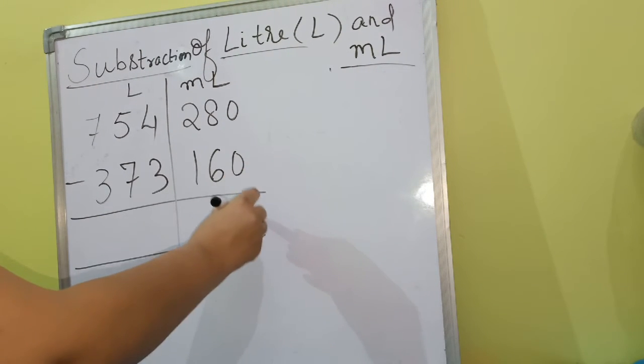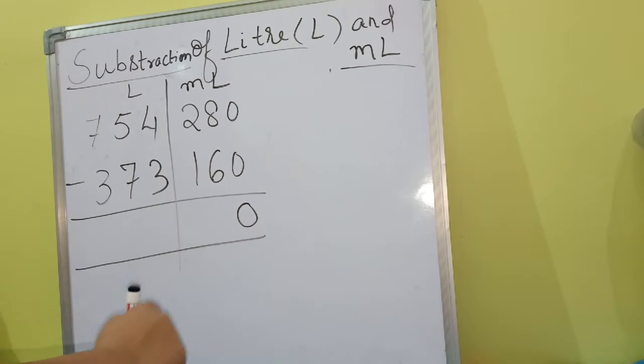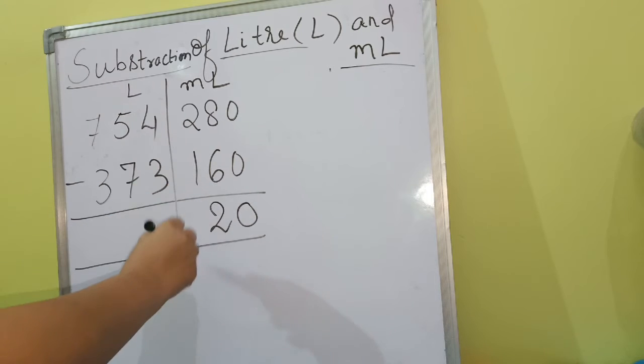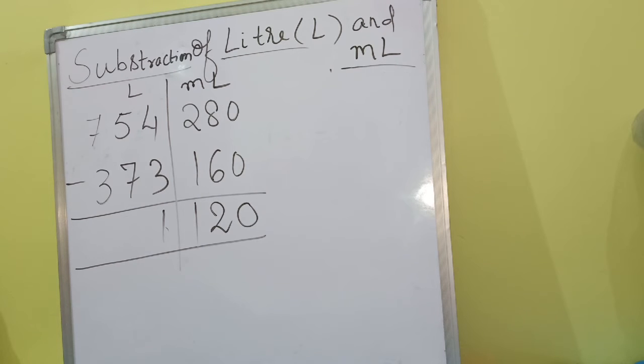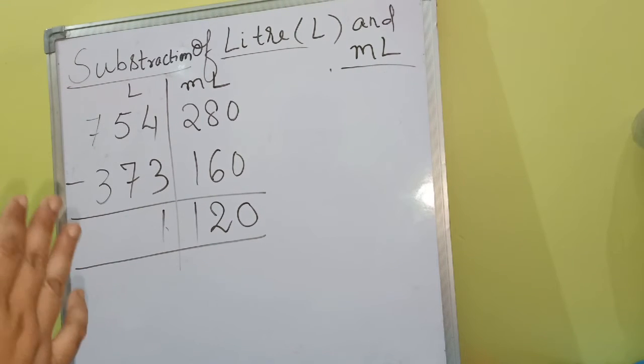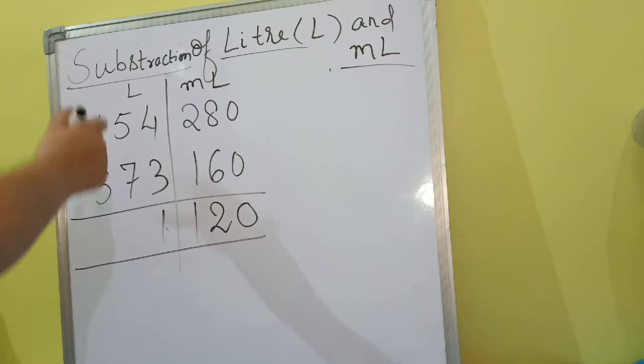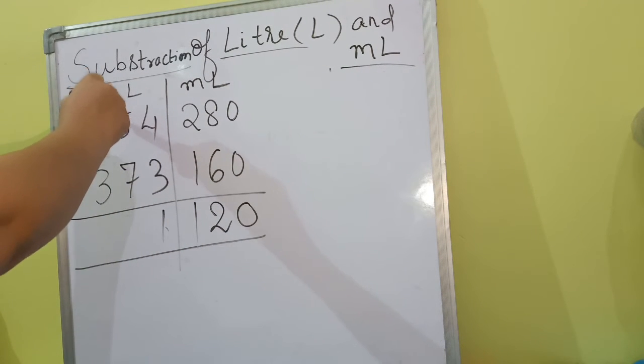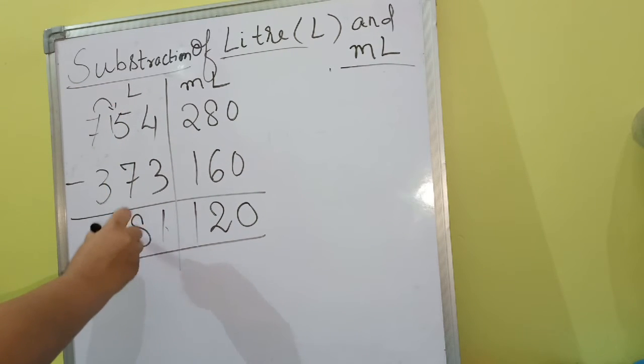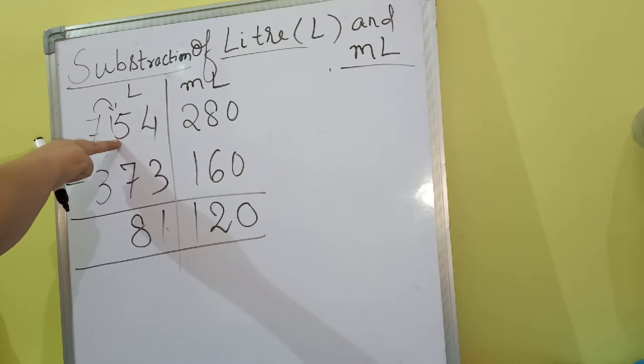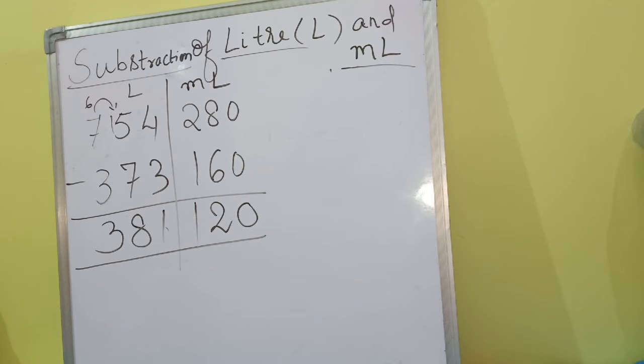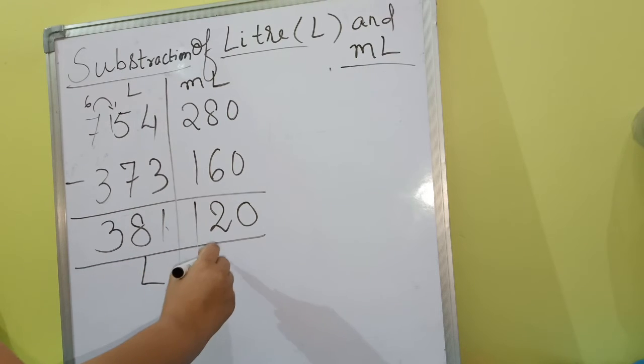So 0 minus 0 is 0, 8 minus 6 that is 2, 2 minus 1 is 1, 4 minus 3 that is 1, 5 minus 7. So our answer is 381 liters and 120 milliliters.